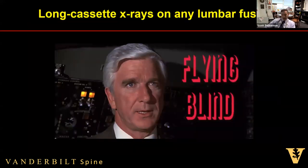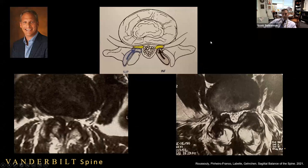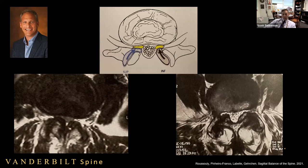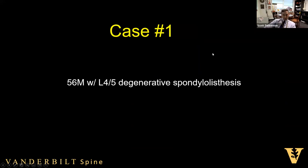I put in a picture from my partner Rich Berkman — an outstanding spine surgeon — to remind us: don't lose the forest for the trees. Don't forget to perform a good decompression. Stenosis often results from superior articular facet overgrowth causing lateral recess stenosis, and in spondy the IAP can slip forward causing stenosis. If you nail the alignment but under-decompress the patient, you've done them a disservice. So don't forget about performing adequate decompression of the neural elements.